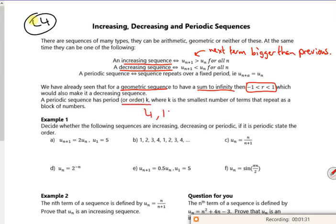Say your sequence was repeating the 4 and the 10, so it's got an order of 2, so k is 2 there.